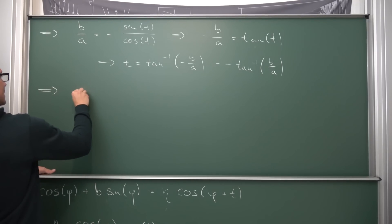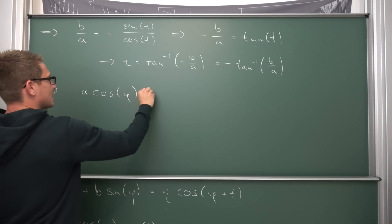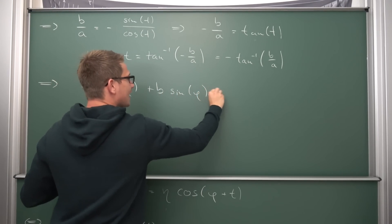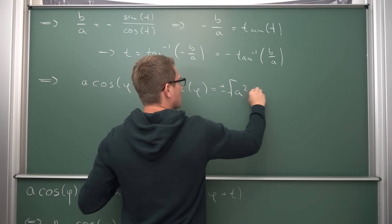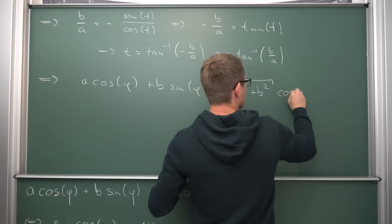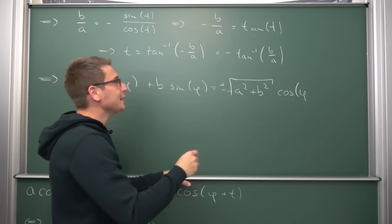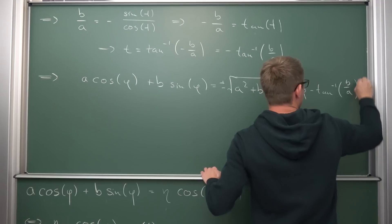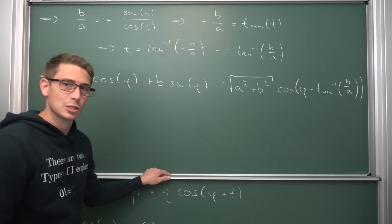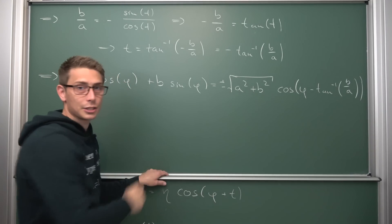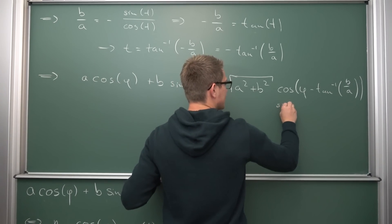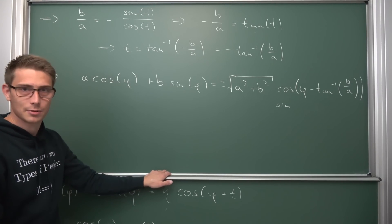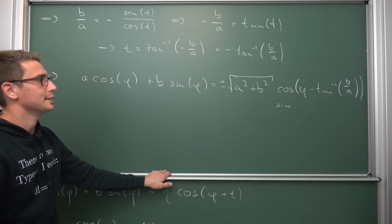Namely, what we are going to get is that the addition of these cosine and sine waves, a cosine of phi plus b sine of phi, is ultimately equal to plus or minus the square root of a squared plus b squared, which was our eta, times the cosine of our angle phi, and our phase shift is negative the inverse tangent of b divided by a. And as I mentioned before, I leave it as an exercise to the dear viewer to figure out what the harmonic addition theorem looks like if you get a sine right here instead of a cosine. It's not much different. It's just a shift in pi over 2, as you might guess. But I leave it to you to figure this one out.